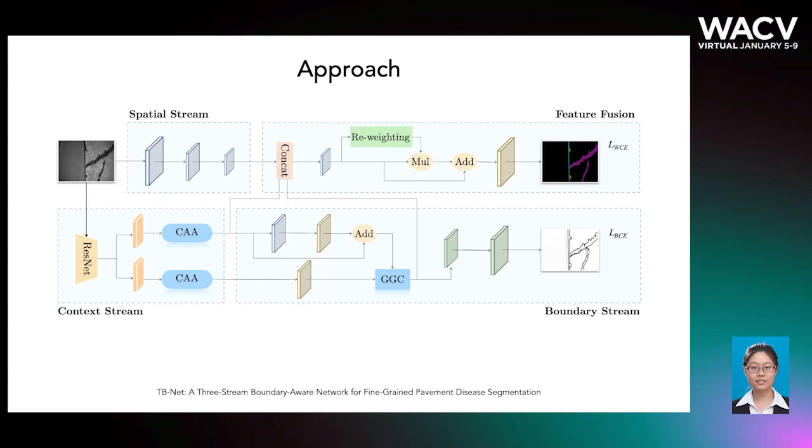In order to tackle the above challenges, we propose a three-stream boundary-aware network. The three streams are designed to explicitly exploit the low-level spatial, the high-level contextual, and the detailed boundary information in order to take full advantages of different feature representations.